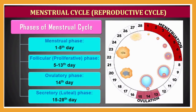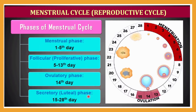The phases of the menstrual cycle include: the menstrual phase from day 1 to 5, the follicular phase (also called the proliferative phase) from day 5 to 13, the ovulatory phase at approximately day 14, and finally the secretory or luteal phase from day 15 to 28.